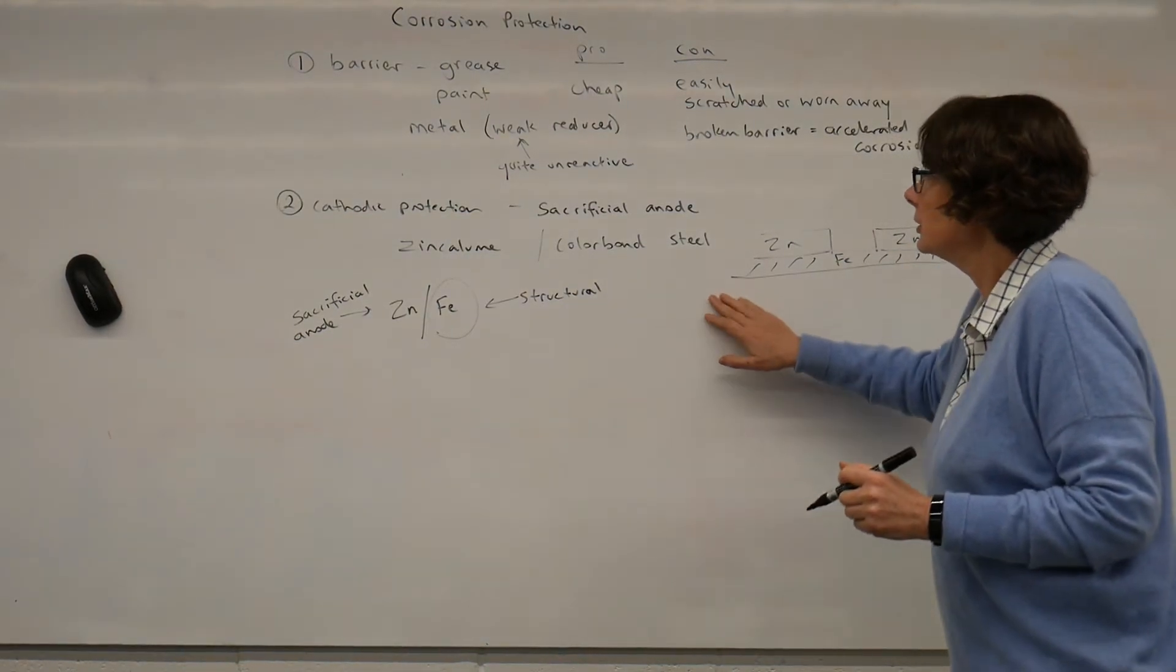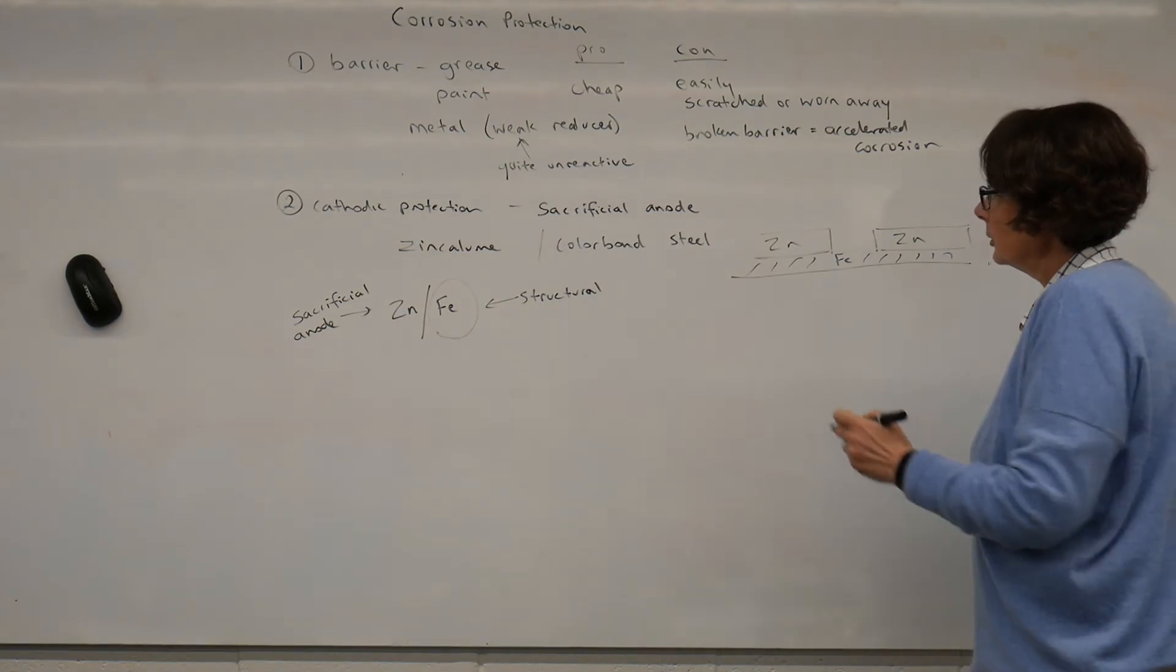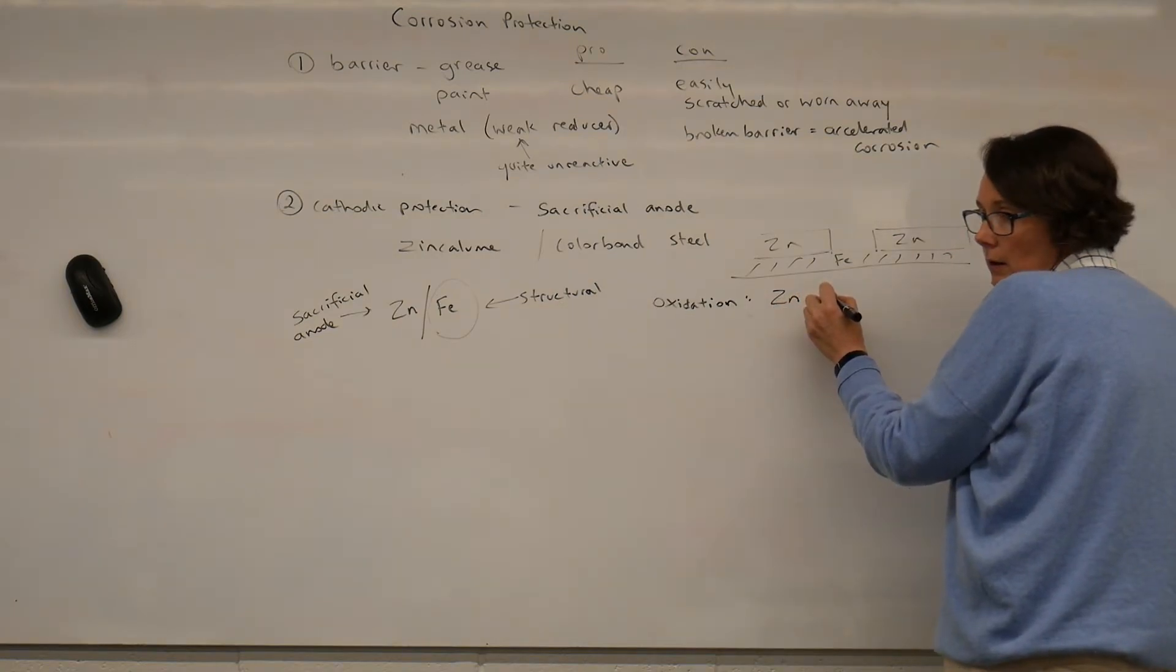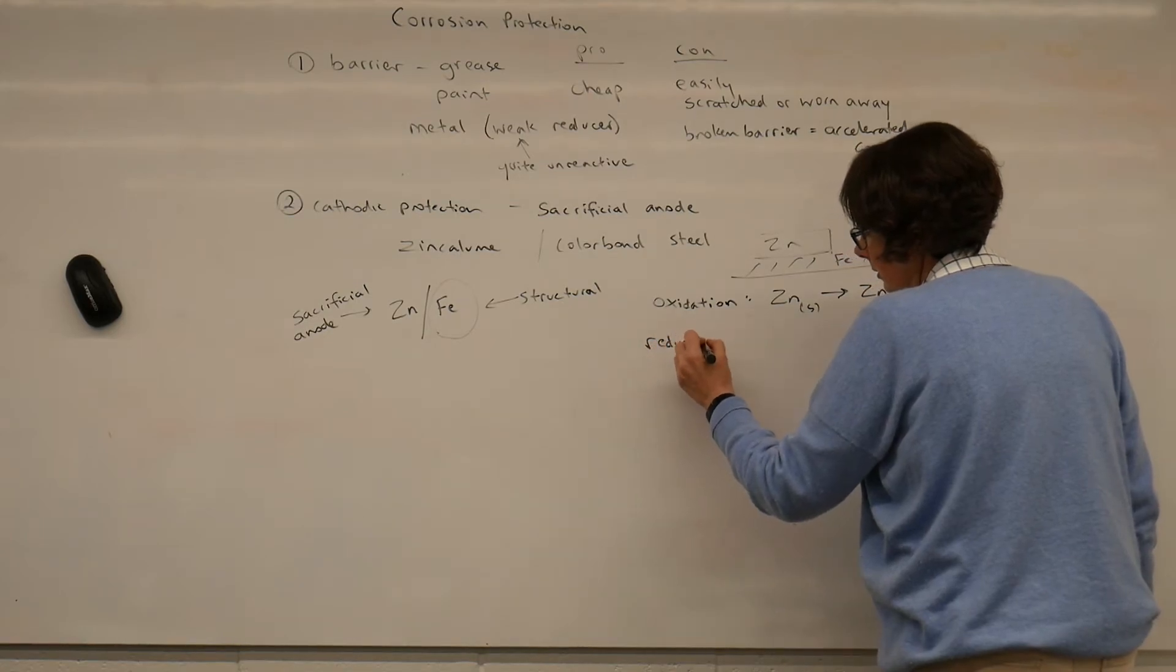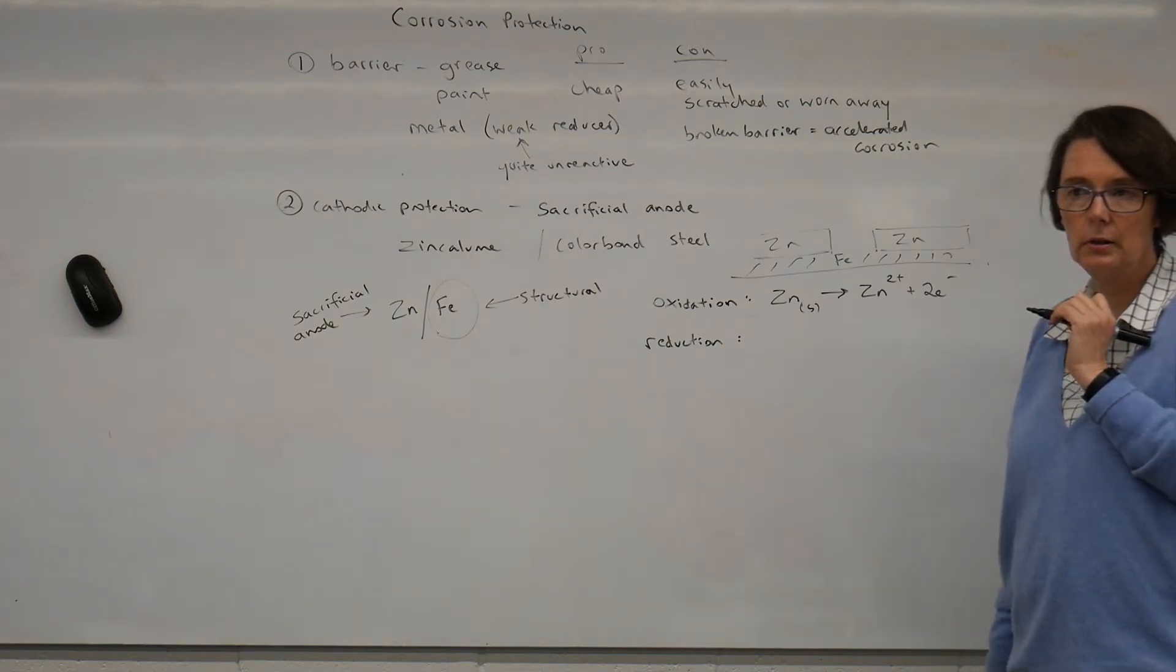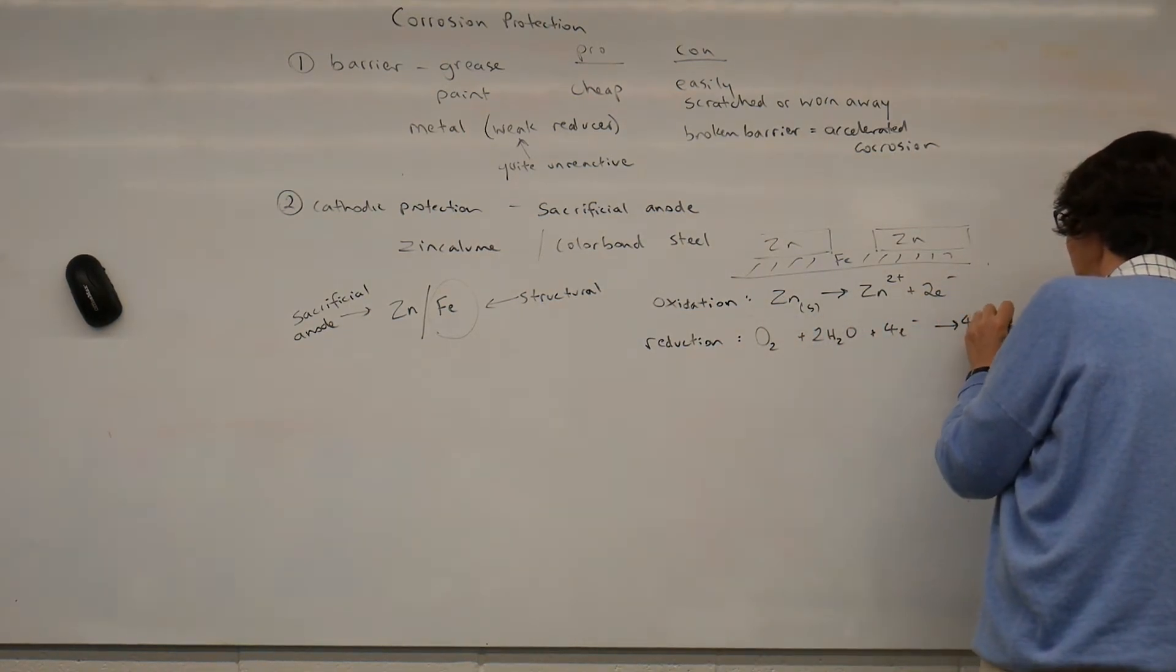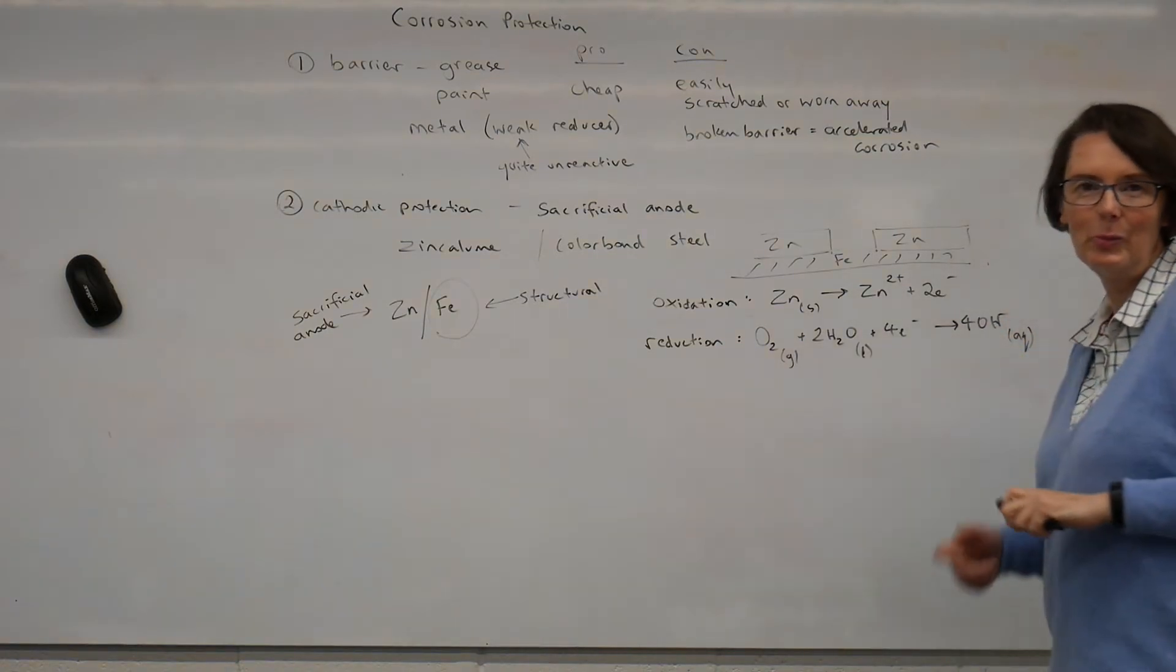So, if we've got this cathodic protection and we have these two metals what are our half equations? What's the oxidation half equation? Oxygen plus two. Have we written that one often enough yet? Do you reckon? Have it sunk in?